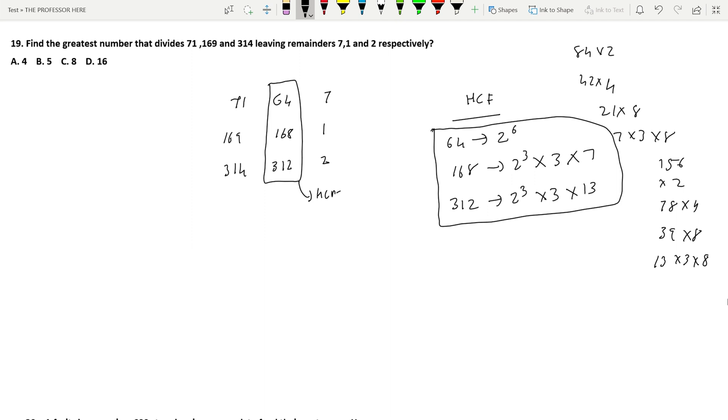So now how to find the highest common factor. 13 is not present in 168 nor in 64, so it is avoided. 3 is present in 168 but not in 64, so 3 is also avoided. 2³ is present in 312, 2³ is present in 168, and 2⁶ is present in 64. But we have only 2³ as common. So HCF is 2³ or 8. The correct answer is option C, 8.